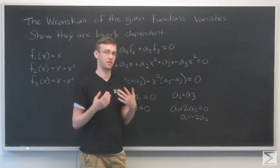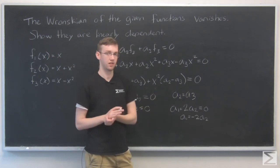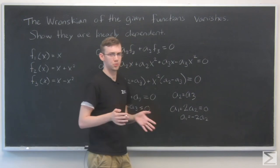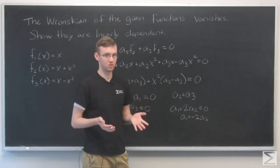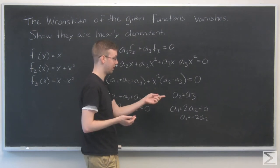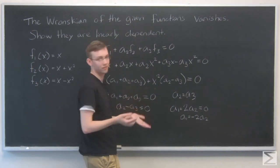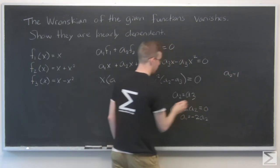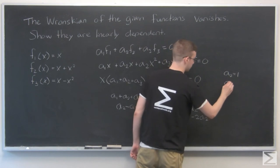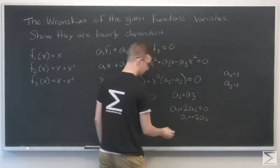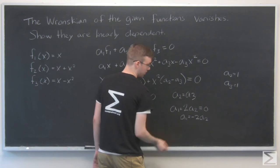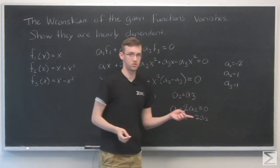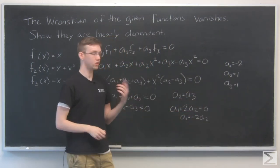From here, I'll pick an arbitrary number for a2, which will determine a3 and a1. These won't be the only possible answers—just one example. I can't pick zero because that would make everything zero. So let a2 = 1. That gives a3 = 1 and a1 = -2.